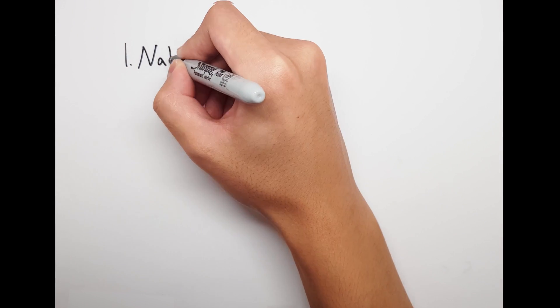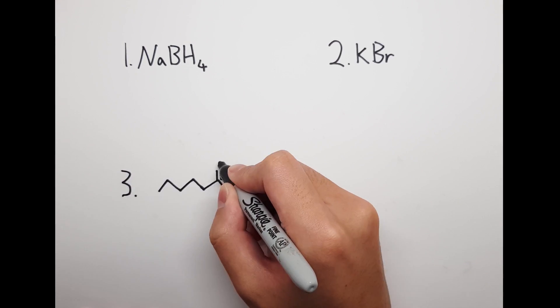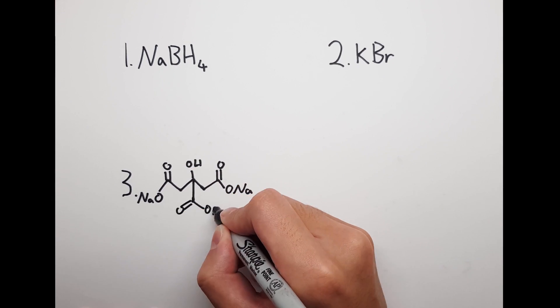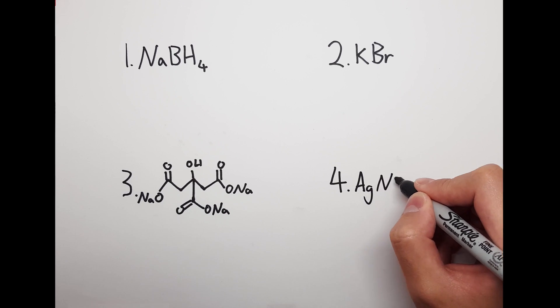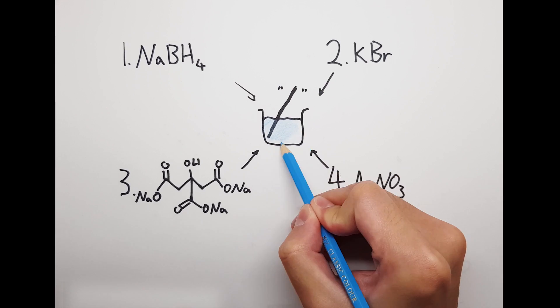We used sodium borohydride as a reducing agent. The stabilizing agent was potassium bromide, and sodium citrate provided the optimal pH. Our source of silver ions was silver nitrate. After we combined these four chemicals, we left it to finish reacting for 10 minutes.